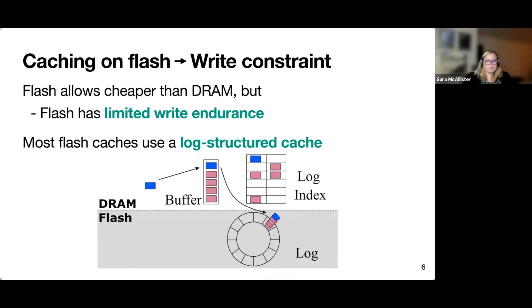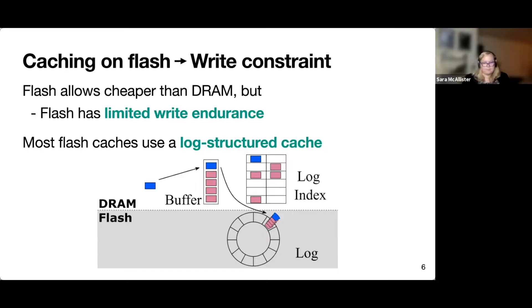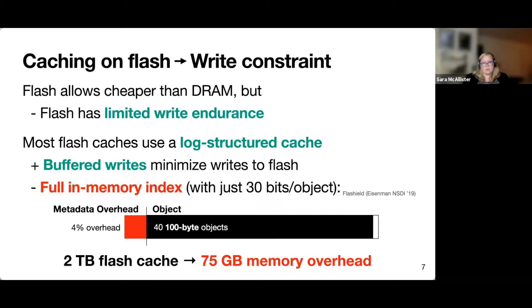The big problem with caching on flash is the additional write constraint. Although flash is cheaper than DRAM, it has a limited write endurance that you don't see in DRAM. You can exhaust this write endurance if you're not careful during the normal lifetime of a flash device, and if you hit this limit, the device becomes unusable. To prevent this, a lot of flash caches use a log-structured approach, which allows you to buffer new objects in memory and then write them all out to flash in a circular log at the same time, using a log index to track where everything is.